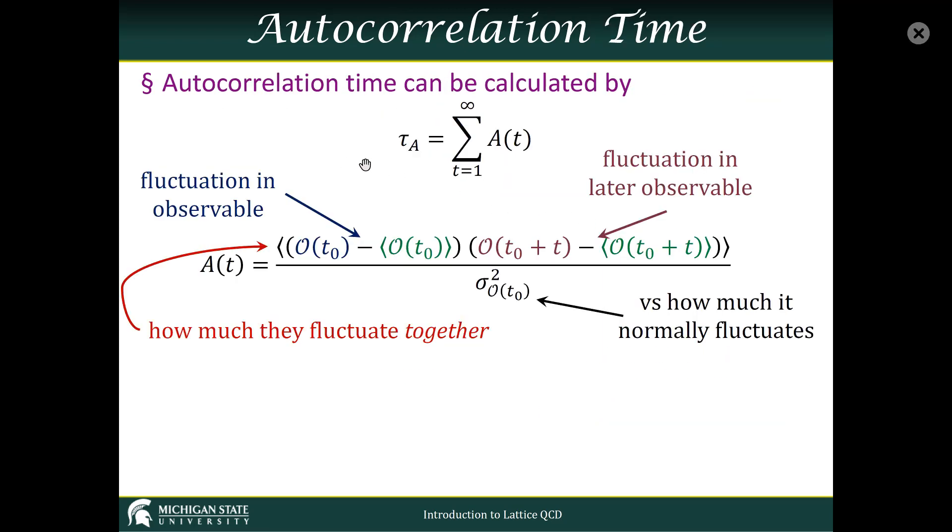Let's look at how we can calculate that quantity, τ_A, the autocorrelation time. The definition is the sum over all Monte Carlo times from one to infinity of this quantity we call A(t), the autocorrelation.